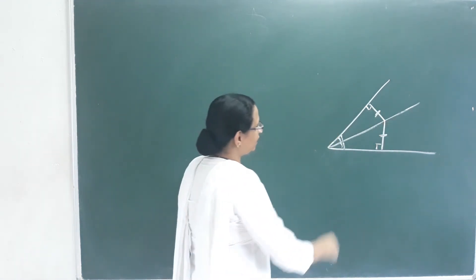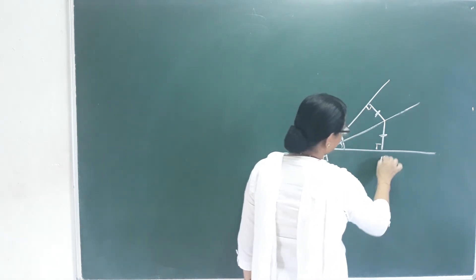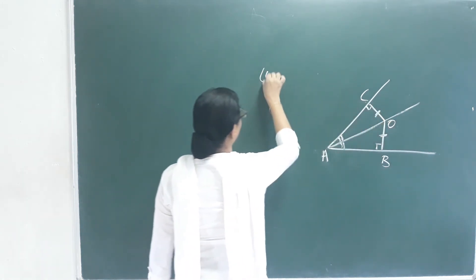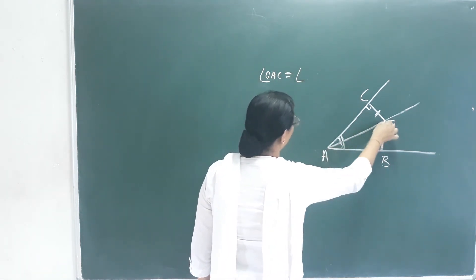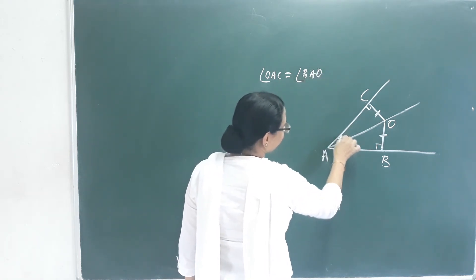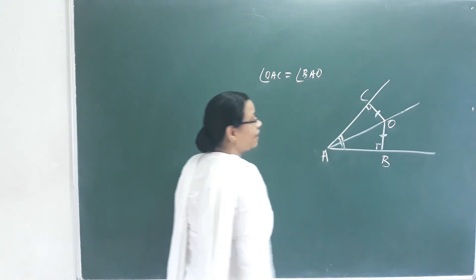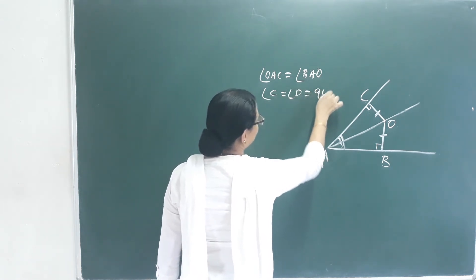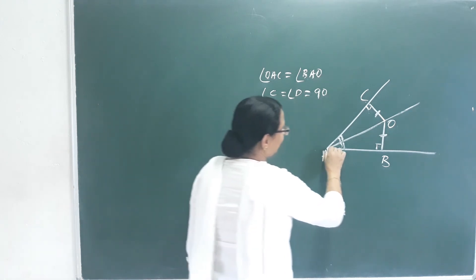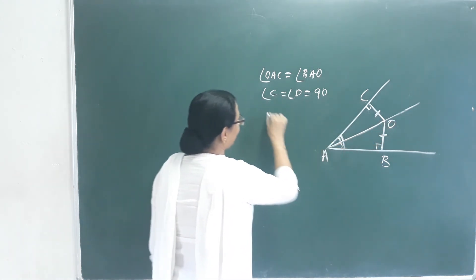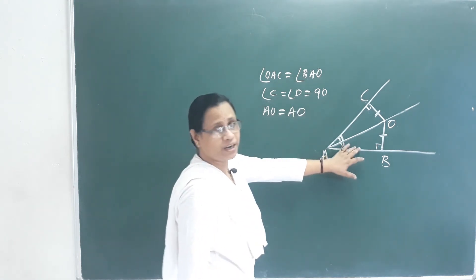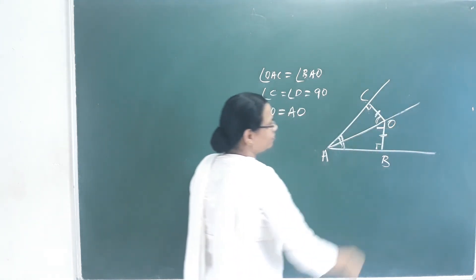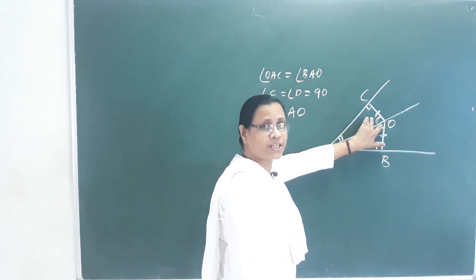If the angle bisector is given, we have angle BAO equal to angle CAO. Perpendiculars OB and OC are drawn to the sides, so angle OCA equals angle OBA equals 90 degrees. Side AO equals AO, which is the common side.